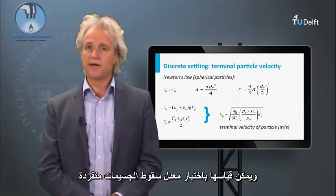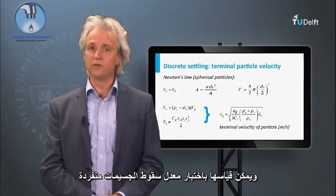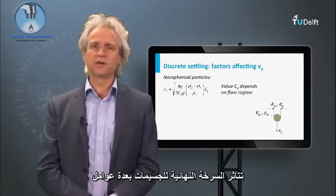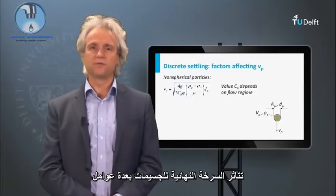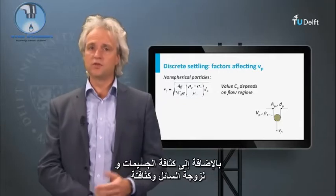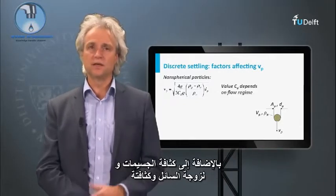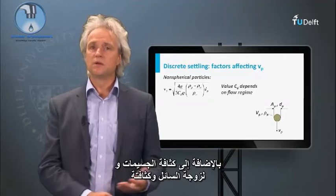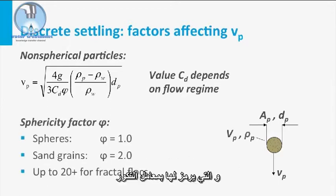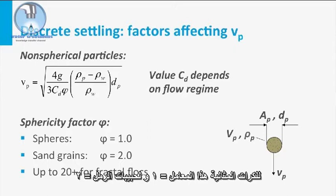This is readily measurable by examining the rate of fall of individual particles. The terminal velocity of the particle is affected by many parameters — anything that will alter the particle's drag. In addition to the particle density and the liquid viscosity and density, the terminal velocity is most notably dependent upon the particle's size and shape, symbolized by the so-called sphericity factor. For ideal spheres, this factor is 1, and for sand particles, the factor is 0.8. Factors exceeding 20 are used for fractal flocs.